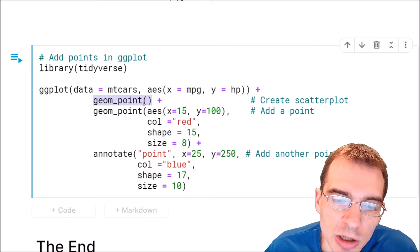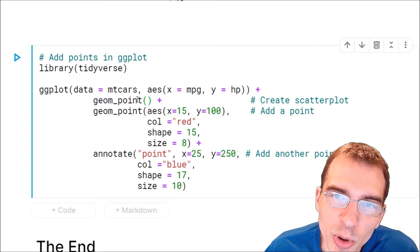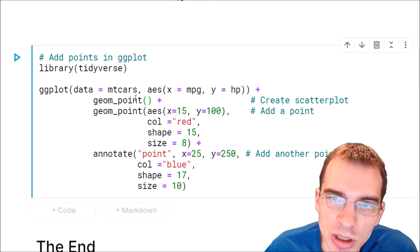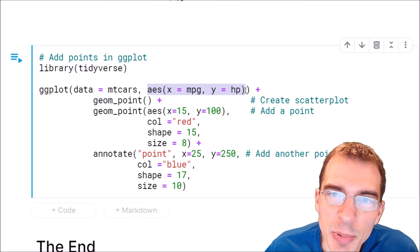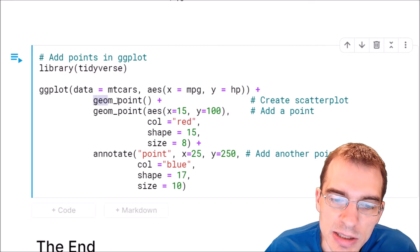Now this geom_point call here is not adding a point to an arbitrary position on the plot, like we're showing how to do in this video. This geom_point call is using the aesthetics passed in here to map actual data onto the plot. So this is what's creating the scatter plot itself.